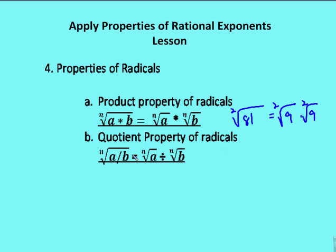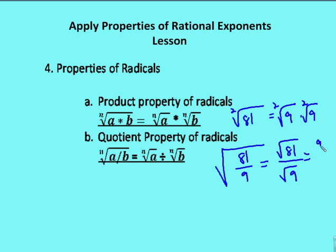The quotient property of radicals is similar to the product property. I can combine the numerator and denominator under one radical sign, or separate them out, as long as they have the same index. For example, the square root of 81 over 9 is the same as the square root of 81 over the square root of 9, giving 9 over 3, which equals 3. The base of the radicand values do not need to be the same.